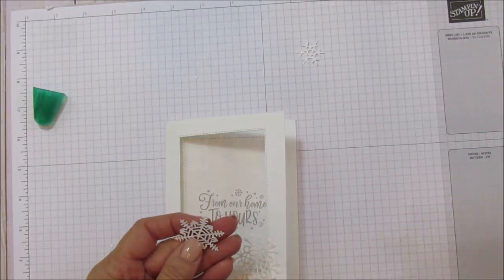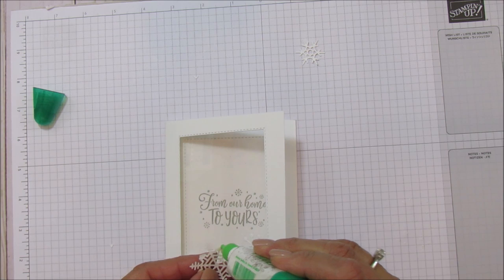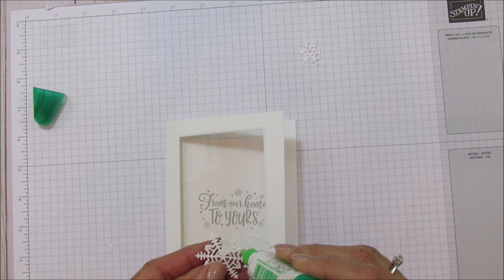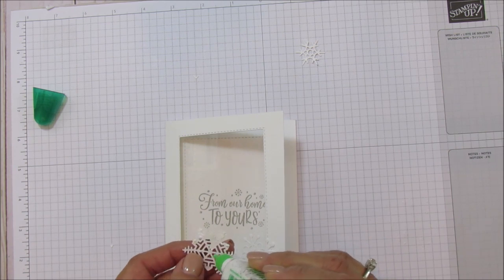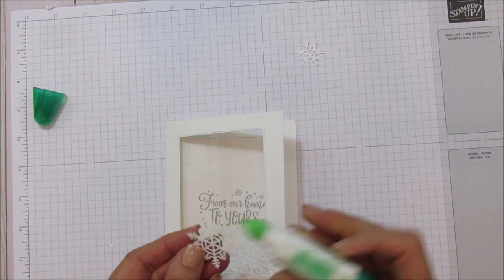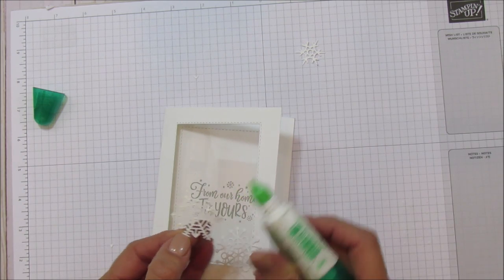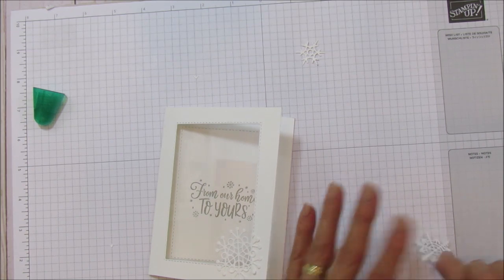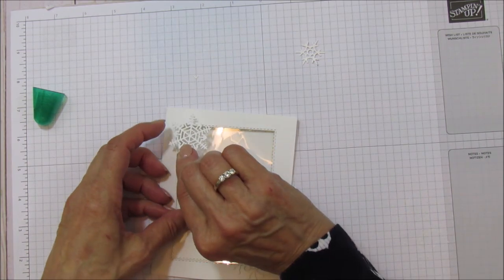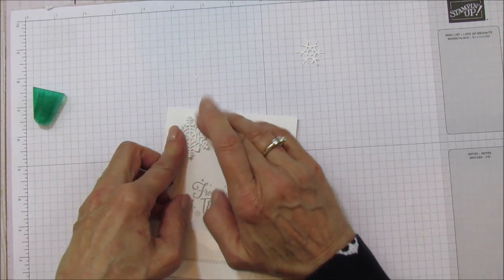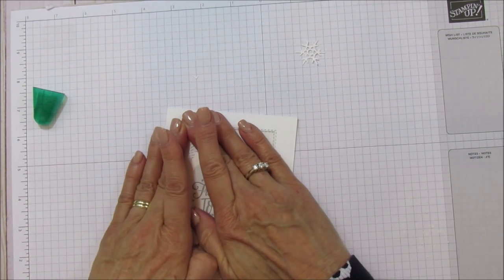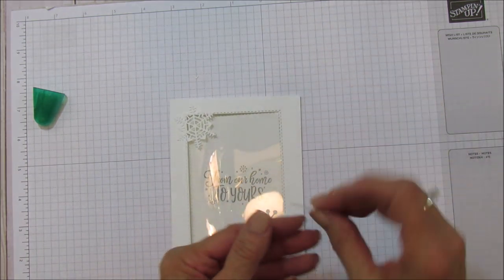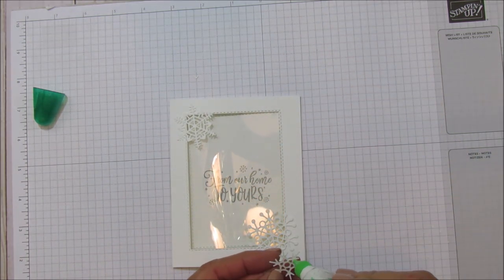I'm just going to hold it and then we're going to do the next one. I'm going to do the same thing—I'm going to put a little bit heavier where it's going to contact the cardstock and then I'm going to go a little bit lighter on the other side. Again I'm just going to wipe a little bit off there and then place this one down.